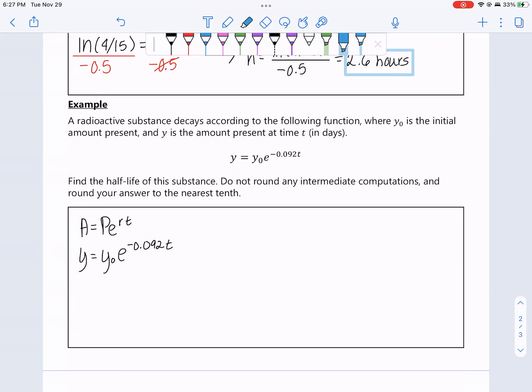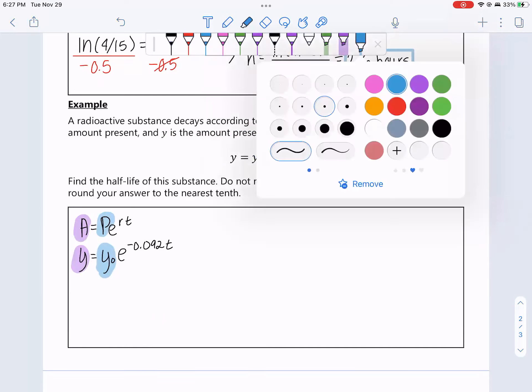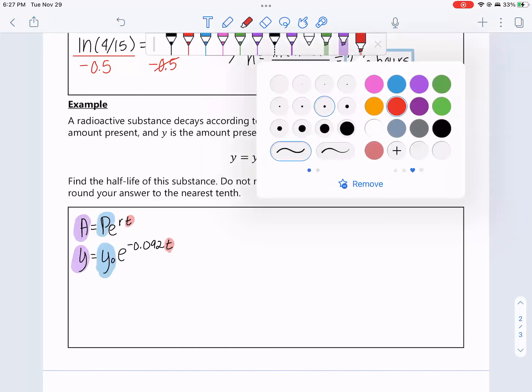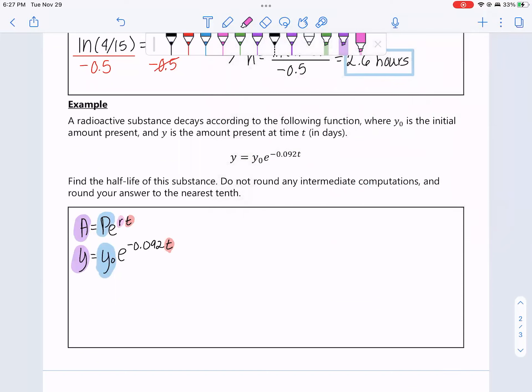Let me show you how it works. So P, our initial amount, is the same thing as Y0. It even says Y0 is the initial amount. A, the mass left after time T, is the same thing as Y. Y is the amount present at time T. T, obviously T is the same thing as T. So this other number right here is the rate, is the decay rate.